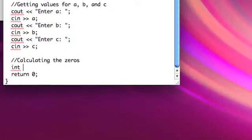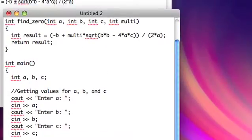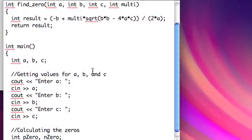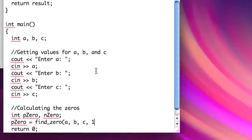So let's calculate the zeros. Let's go ahead and make int positive 0 and negative 0. Something to store these in. Positive 0 is going to equal, let's go up, find 0, and then we'll copy in A, B, and C, and then since it's the positive 0, we'll go ahead and put a 1.